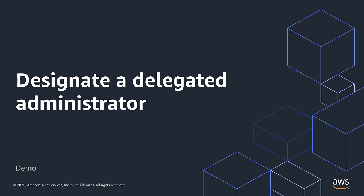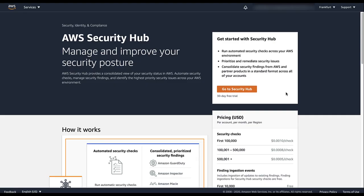The first step to using your organization structure to manage accounts is to designate the Delegated Administrator account for Security Hub. The Delegated Administrator can see the accounts in the organization and becomes the Security Hub administrator account. The Organization Management account designates the Delegated Administrator account.